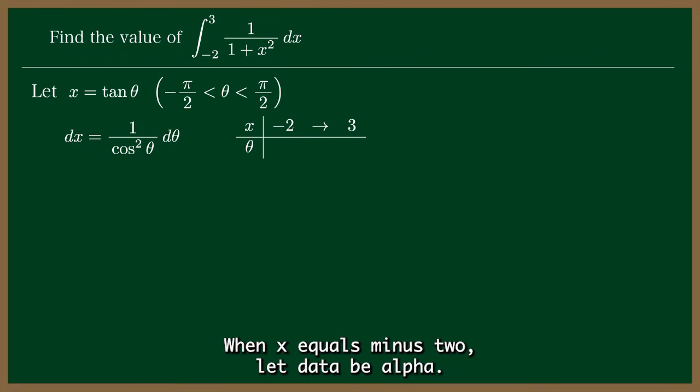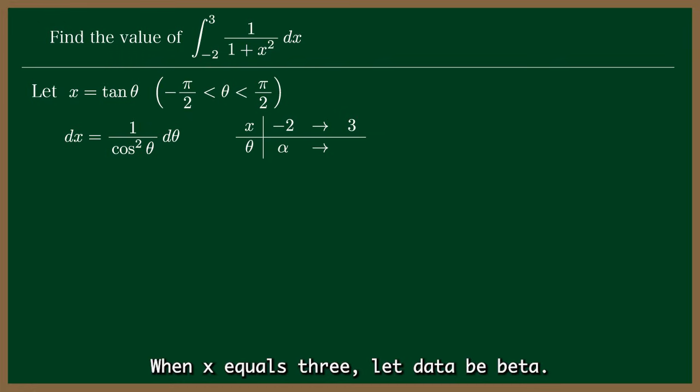When x equals minus 2, let theta be alpha. When x equals 3, let theta be beta. So theta will move from alpha to beta.